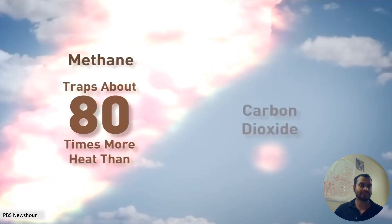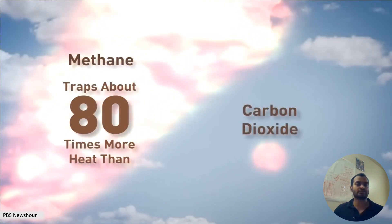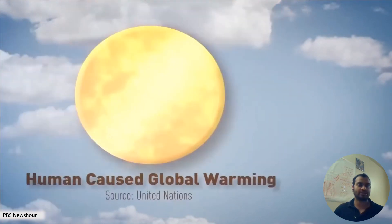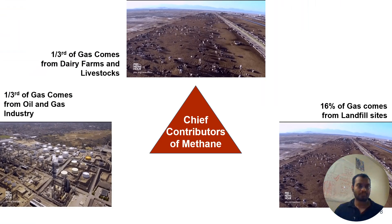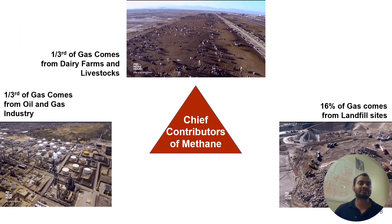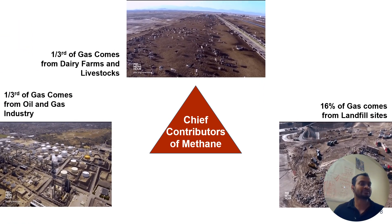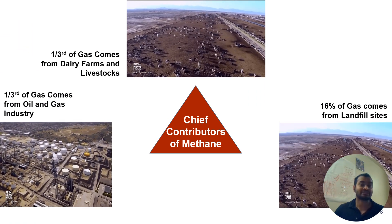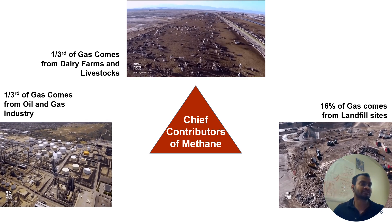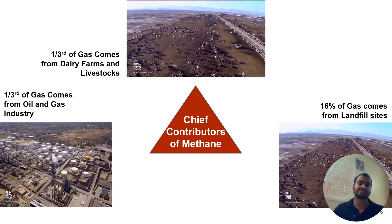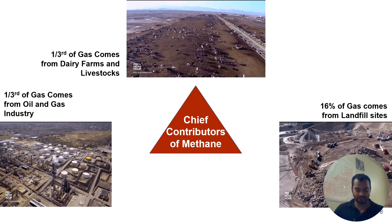To put it into perspective, the amount of damage carbon dioxide will do to the environment in 100 years, methane can do that in just 1.2 years. So where does this come from? One third of gas emissions come from dairy farms and livestock, one third comes from the oil and natural gas industry, and 16% comes from landfill sites.